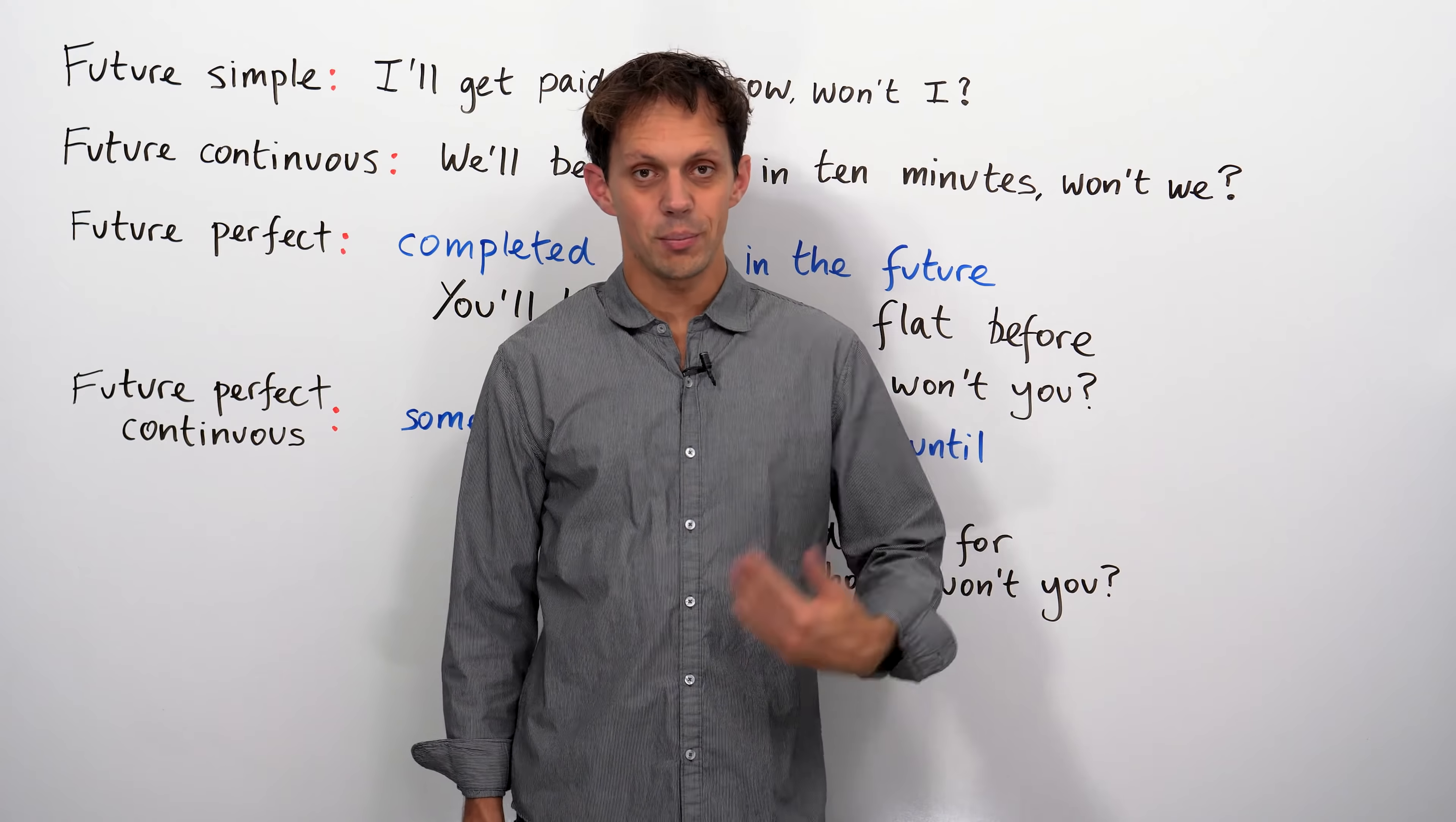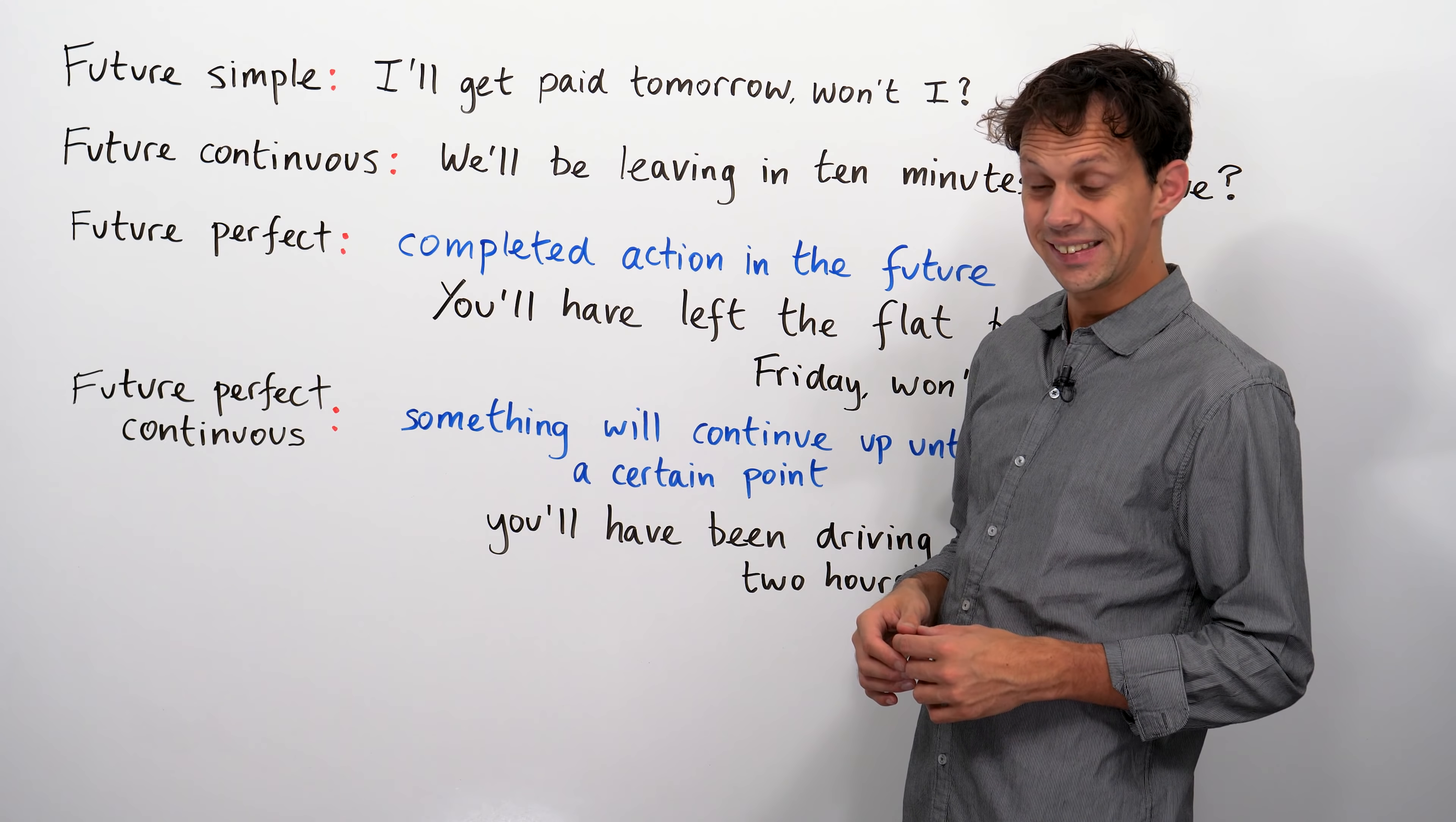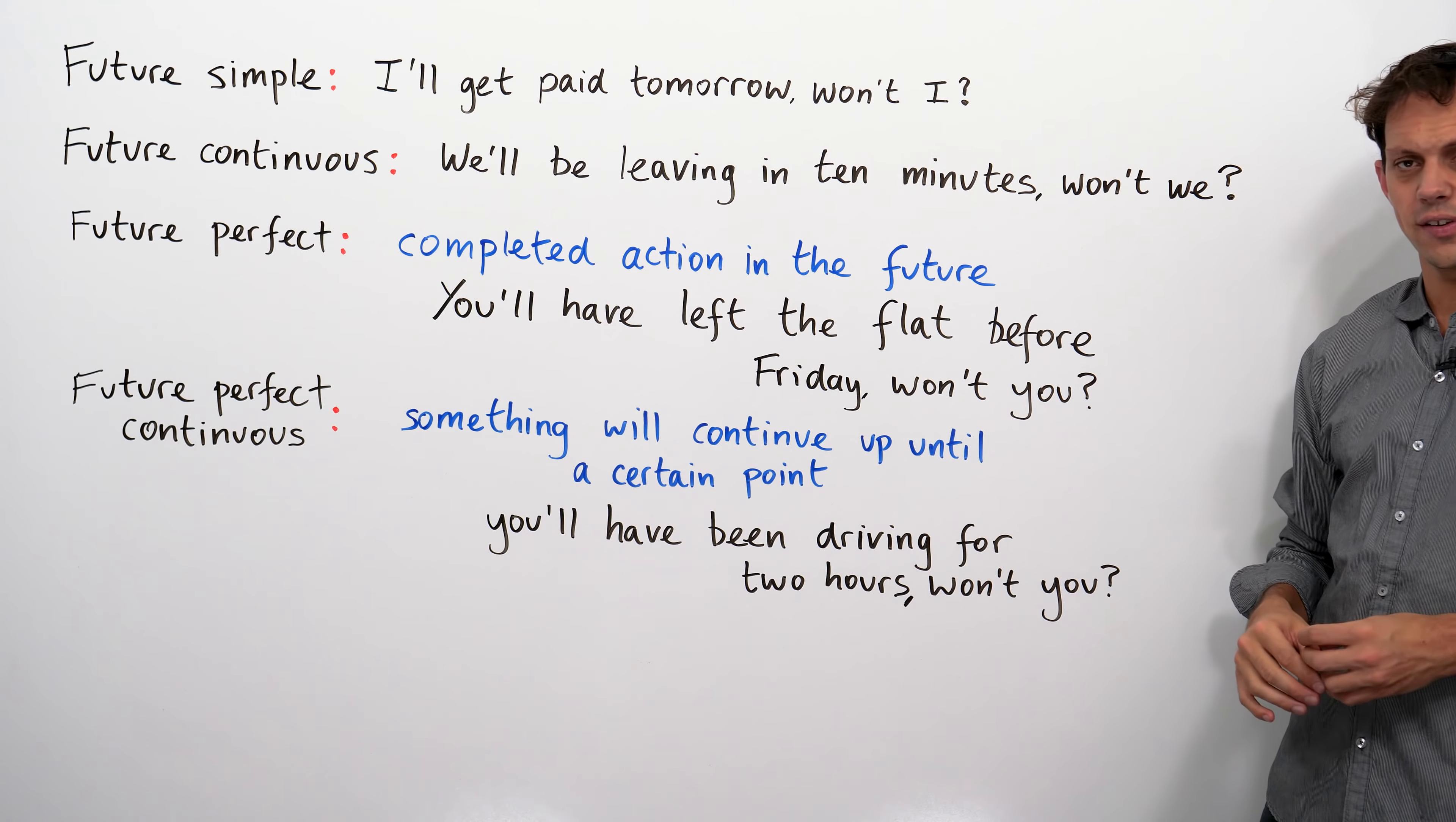Hi, guys. Made it into the future with me. Great stuff. Onwards to the future simple. I'll get paid tomorrow, won't I? Checking that it's going to happen, hopefully. Future continuous. We'll be leaving, ing form of the verb, in ten minutes, won't we? Checking that this is going to happen.